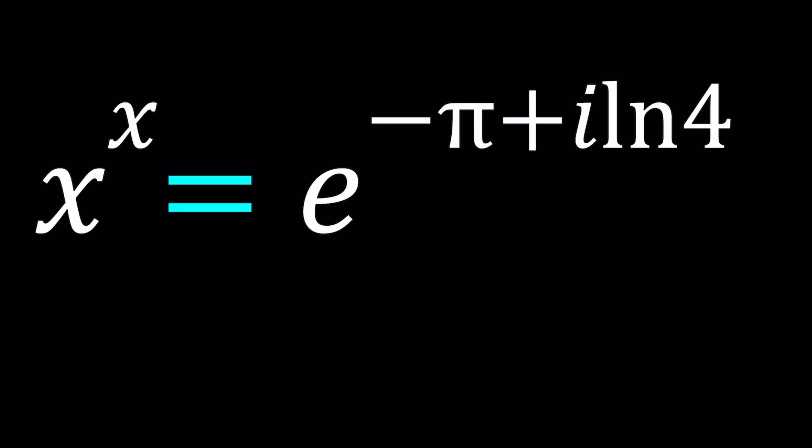Hello everyone, in this video we're going to be solving an interesting homemade exponential equation. We have x to the power x equals e to the power negative pi plus i ln 4, and we're going to be looking for x values.